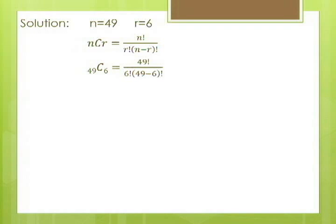We have now the combination of 49 objects taking 6 at a time is equal to 49 factorial over 6 factorial times the factorial of 49 minus 6. Let us first simplify the expression inside the parenthesis. Thus, we have 49 factorial over 6 factorial times 43 factorial.